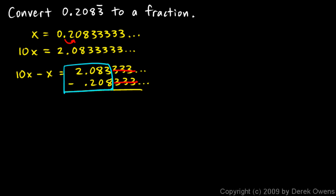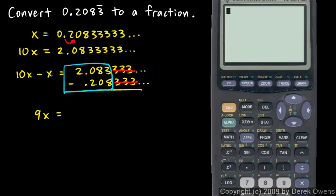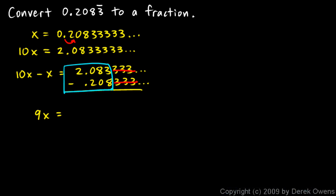So on the left, I have 10x minus x. That's 9x. And on the right, I have 2.083 minus 0.208. And you can work that out. You could work it out by hand, or you could pull it up on the calculator here. I'll just punch it in, this is 2.083 minus 0.208. And that comes out to 1.875.